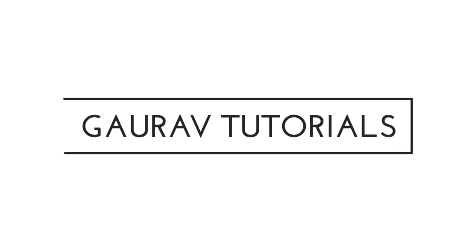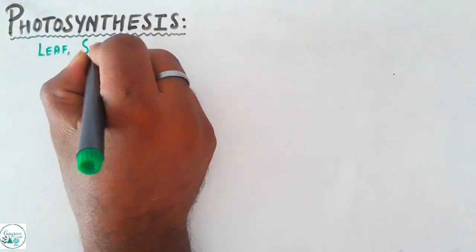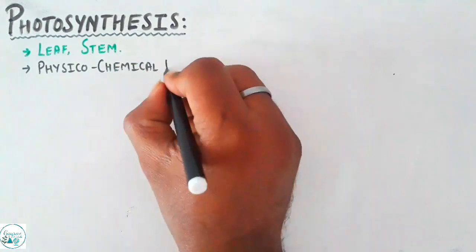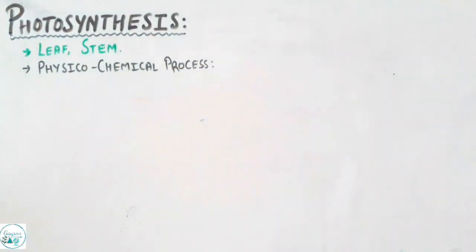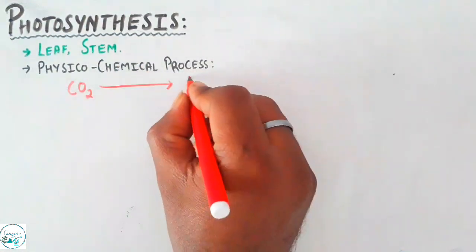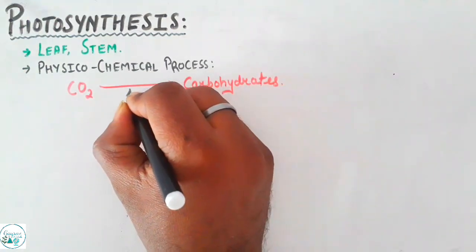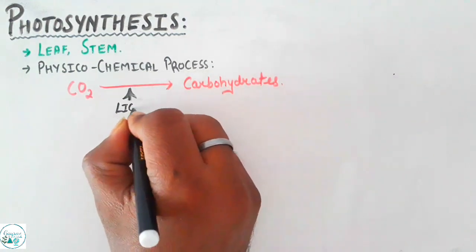Friends, welcome back to Guaro tutorials. This is the first video in the series of photosynthesis, so we'll be focusing on the history of photosynthesis. It basically takes place in the leaf and stem. Photosynthesis is a physico-chemical process during which carbon dioxide is reduced to carbohydrates, and for this particular reaction the presence of light is very significant.